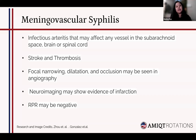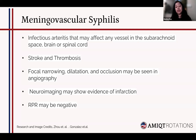Meningovascular syphilis is infection of the meninges and vessels. Infectious arteritis affects the subarachnoid space and the vessels around the brain and spinal cord. The typical presentation is a young person with acute stroke. We work up the stroke with MRI and can see infarcts; on angiography we can see focal narrowing, dilatation, and occlusion. In many cases, RPR or VDRL may be negative, making the diagnosis tricky — but a history of stroke in a young person with a prior history of syphilis should raise suspicion.